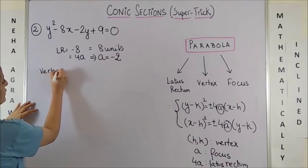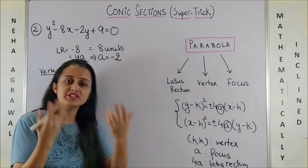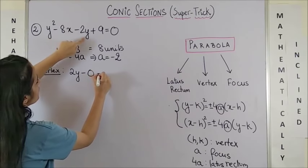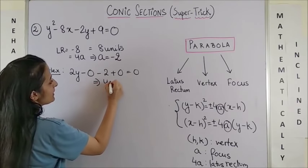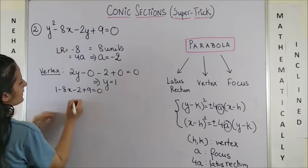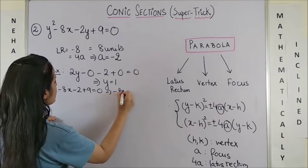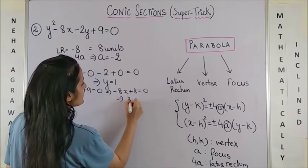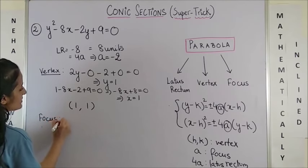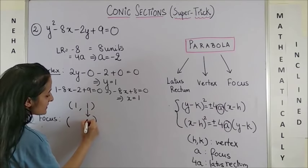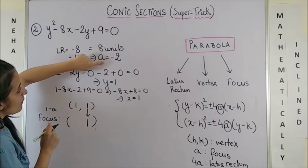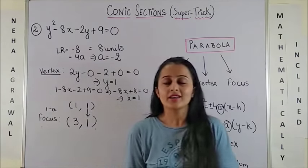For the vertex: since it is y², differentiate with respect to y treating x as constant, giving 2y − 2 = 0, so y = 1. Substitute y = 1 into the equation to get −8x + 8 = 0, so x = 1. The vertex is (1, 1). For the focus: the y-coordinate is copied as 1, and the x-coordinate is 1 − a = 1 − (−2) = 3. So the focus is (3, 1).